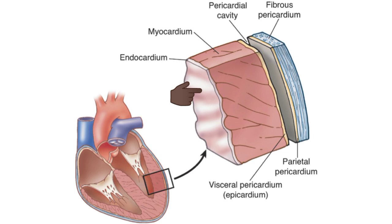The endocardium is the innermost layer of the heart wall. It is a thin, smooth, and glistening membrane formed by a single layer of endothelial cells lining the inner surface of the heart. The endocardium continues as the endothelium of the blood vessels.